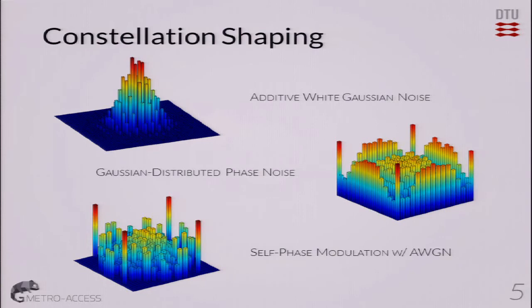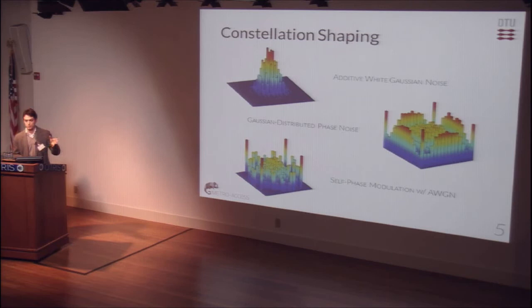We were so motivated by these results that we wondered: let's apply this to other channels of interest, like Gaussian distributed phase noise and self-phase modulation together with additive white Gaussian noise. These are the outcomes. Of course, we took as an assumption that we were using a memoryless channel, but these are already very good results that are opening up consideration for using shaping — raw shaping for the nonlinear region — without using resources like OFDM, twin waves, or backpropagation that make our channel Gaussian-ish and memoryless.